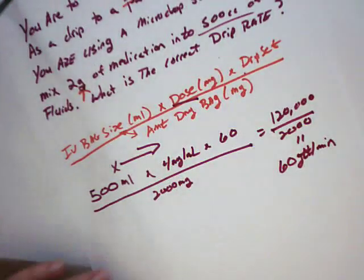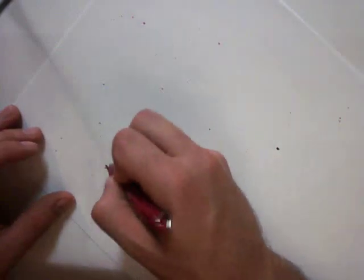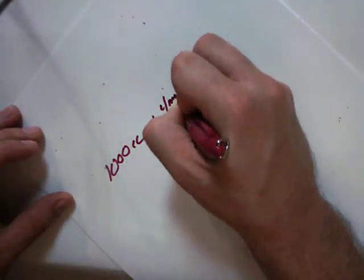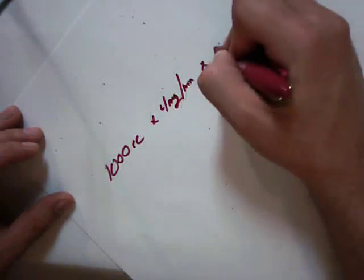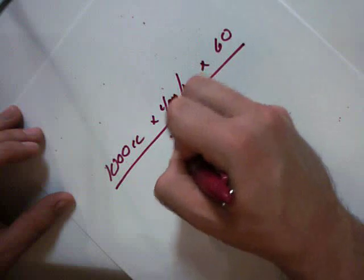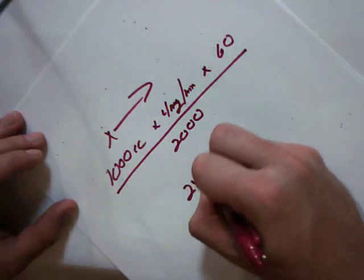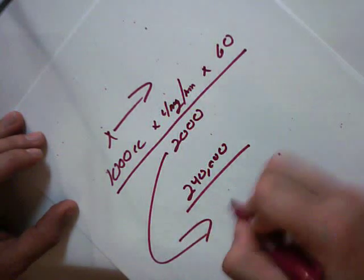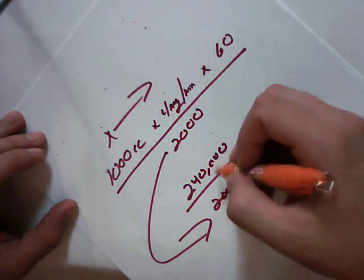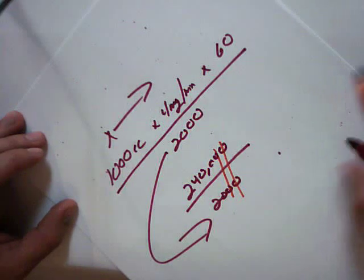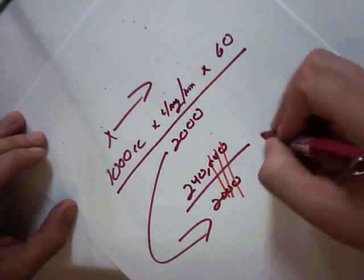Let me change these numbers around. We'll do the same problem, but instead of a 500 cc bag, why don't we do this in a 1,000 cc bag. It's still going to be 4 milligrams per minute. Haven't changed our drip set, which is still 60, and we haven't changed the amount of our medications, which is 2,000. We'll multiply across. That's going to give us 240,000 over 2,000. Remember from the other lecture, we'll cross out these extra zeros. Not necessary. So 240 over 2 works out to 120.